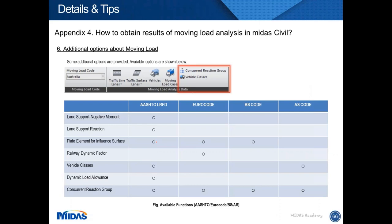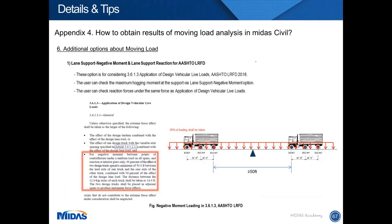When selecting the moving load code, additional functions appear next to the moving load cases. These functions appear differently depending on the selected design code. AASHTO code has many additional functions; Eurocode, BS, and AS codes have different additional functions. The common option across all codes is the concurrent reaction group.